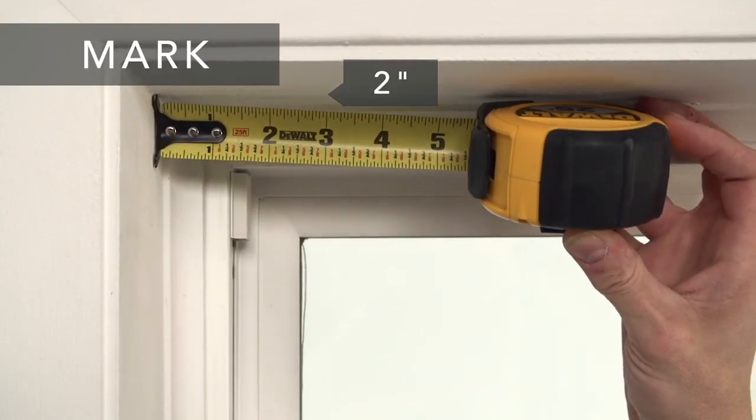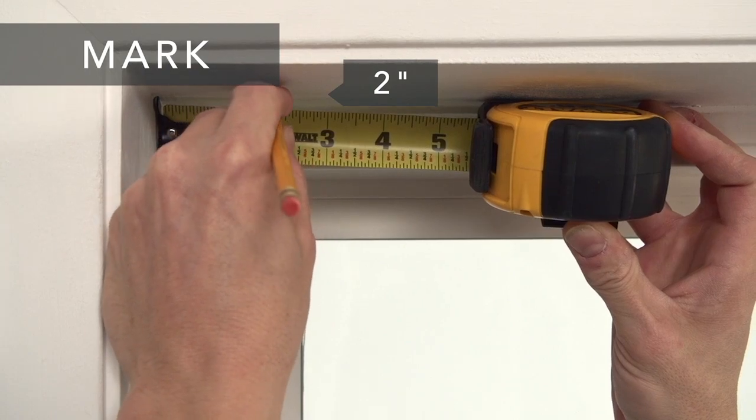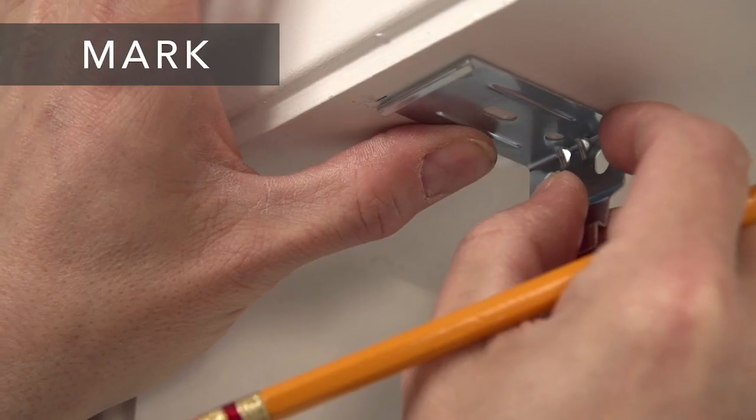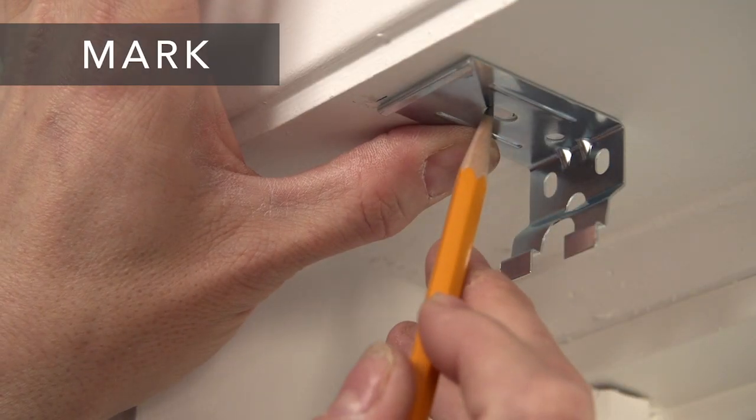Next, make a mark two inches in from the window casing. Hold the brackets up to the marks and mark the screw locations.